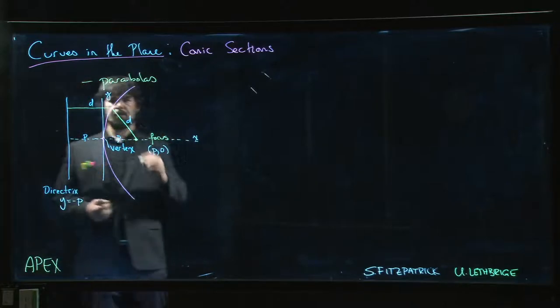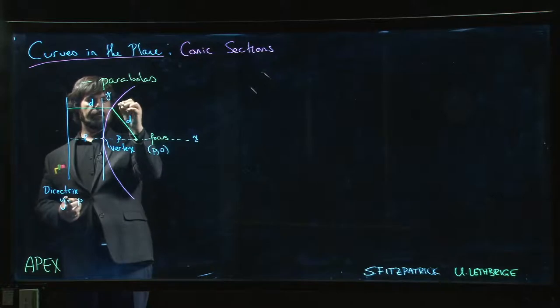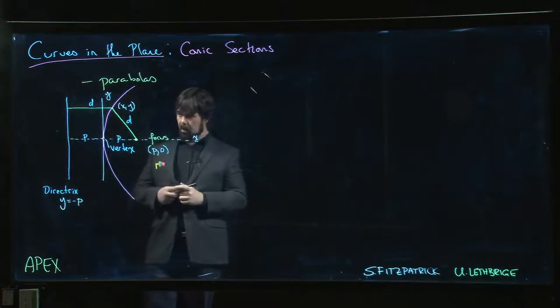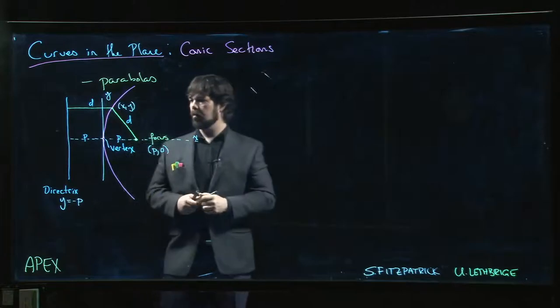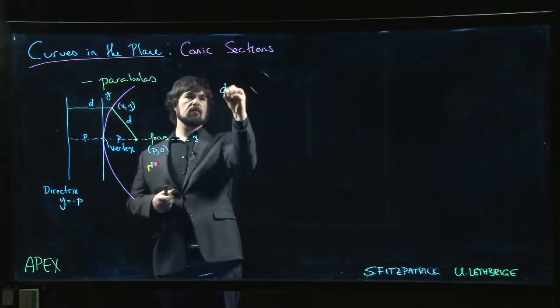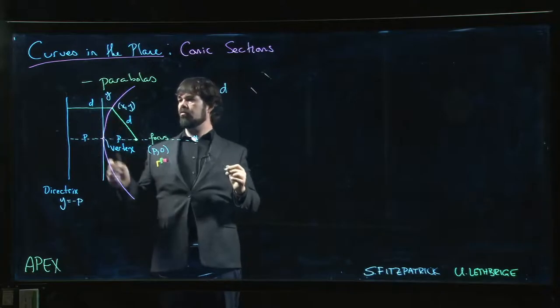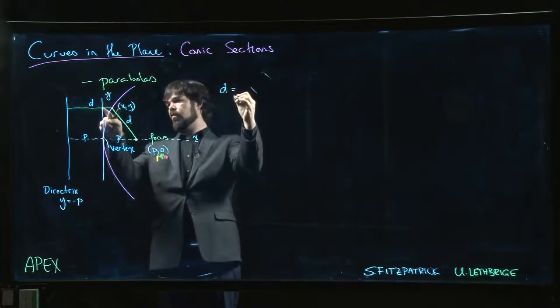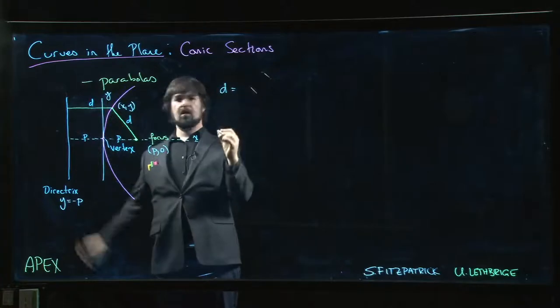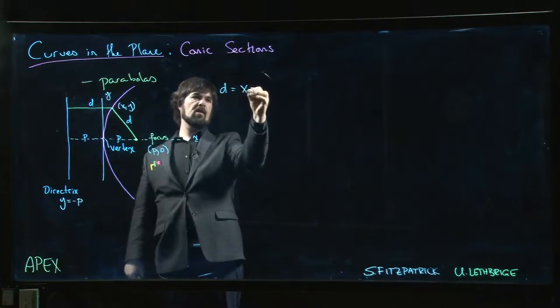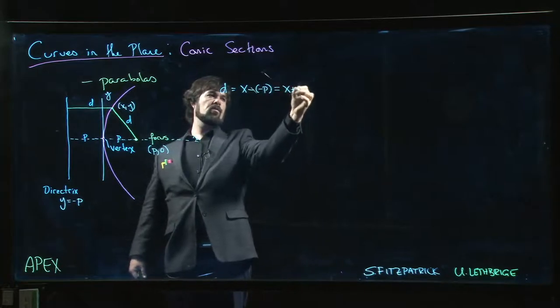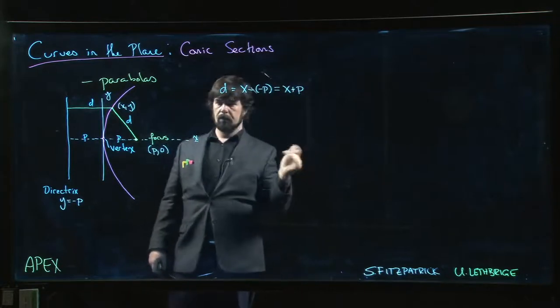So if I have a point x, y on my parabola, what can I say? Well, on the one hand, the distance is just going to be the distance between x and the y-axis, and then the y-axis in there. So the distance is going to be x subtract minus p. So it's going to be x plus p.